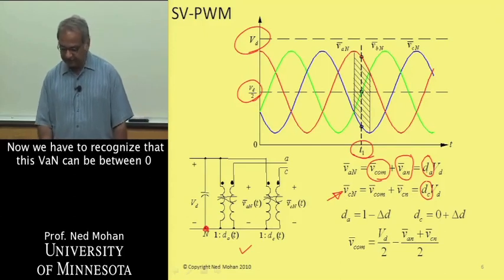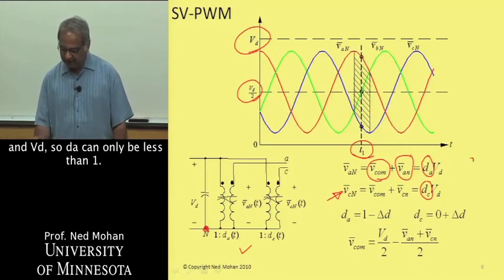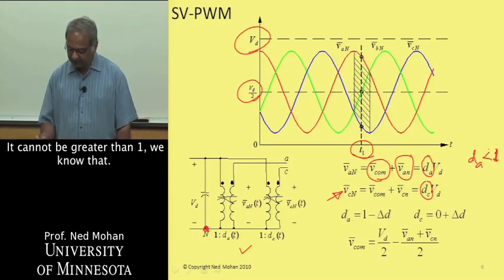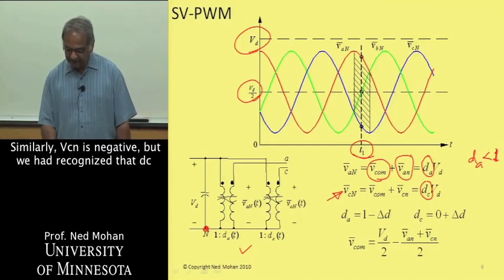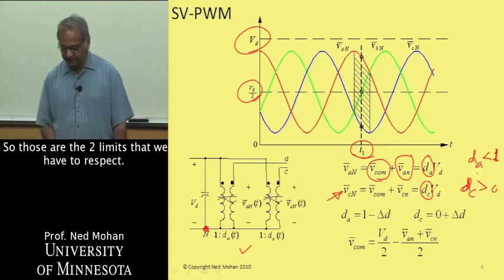We have to recognize that this VAN can be between 0 and VD, so DA can only be less than 1, it cannot be greater than 1. And similarly VCN is negative, but we have to recognize that DC, this duty ratio of pole C, must be greater than 0. So those are the two limits that we have to respect.